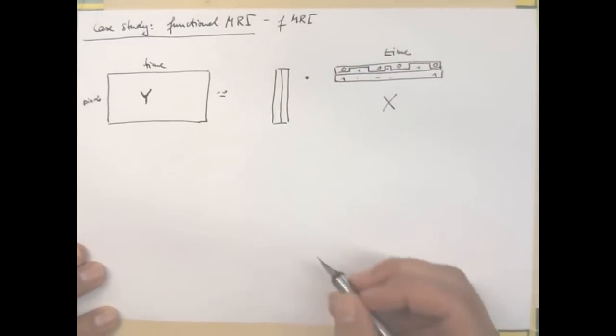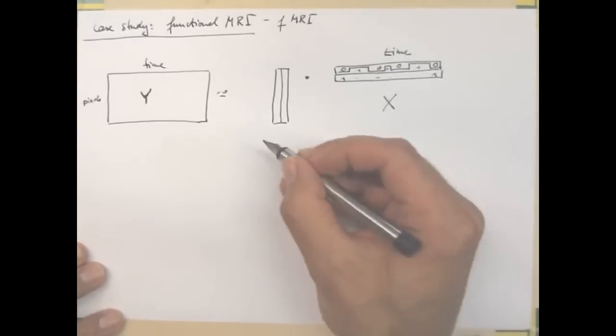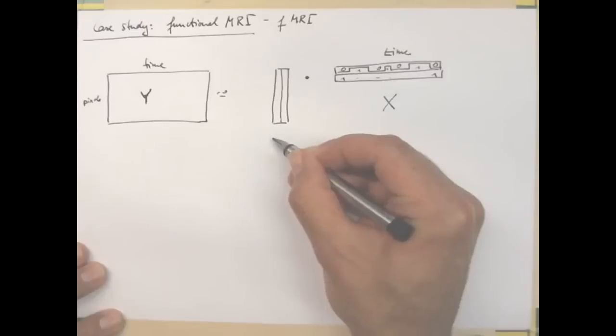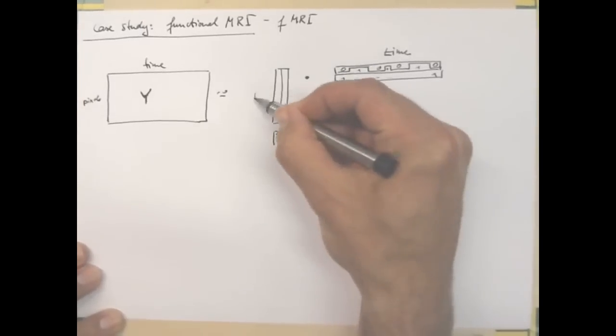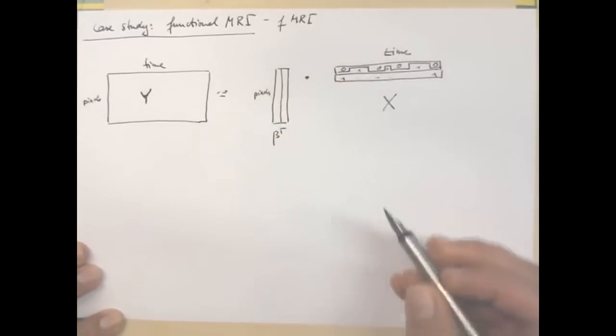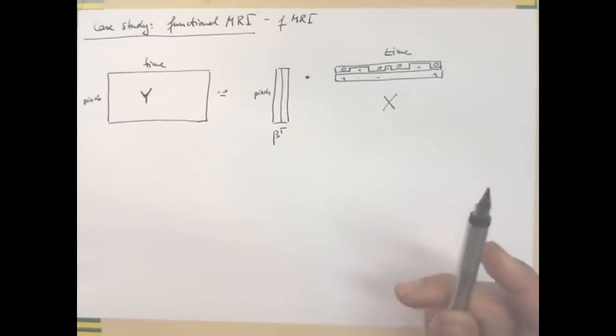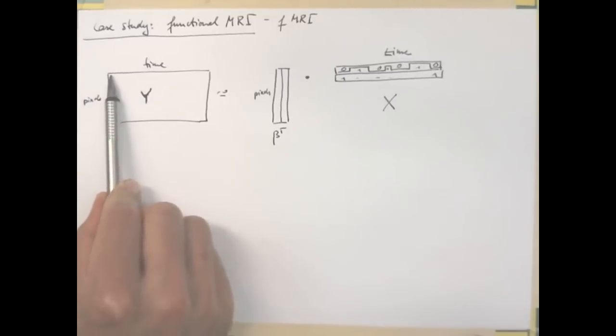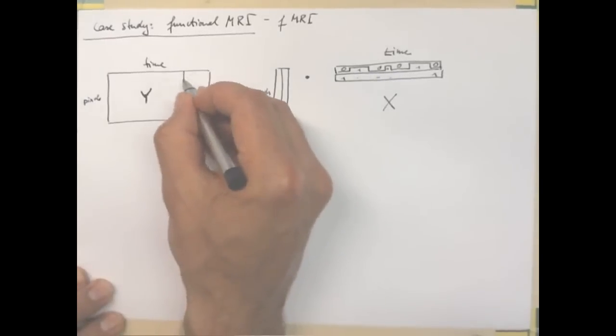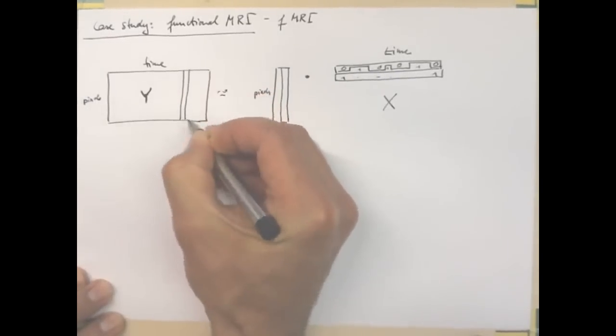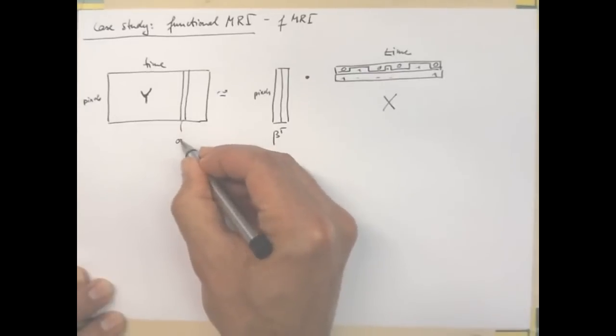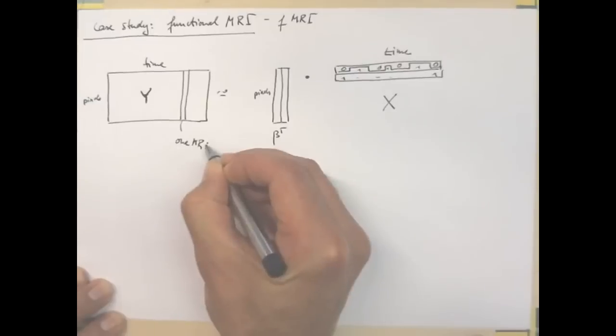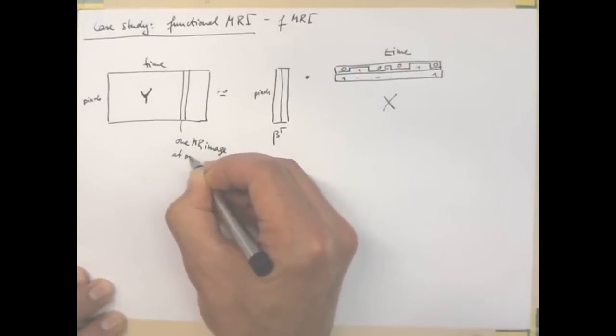So I'm here using my regression coefficients, this would be beta transposed. So I know that MR images are two-dimensional, but I had to vectorize each of these images to fit into a particular column. So this column here would be one magnetic resonance image at one time point.